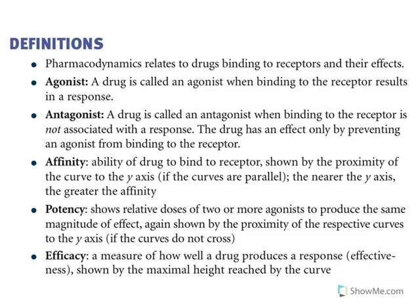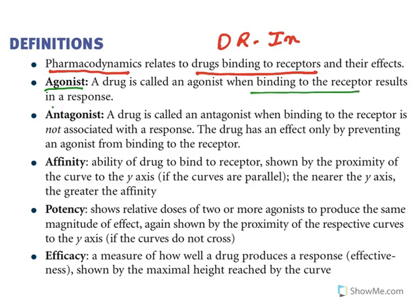Let's get into the topic. First, let us understand some definitions. Pharmacodynamics relates to drug binding to receptors — drug-receptor interactions are dealt with in pharmacodynamics. An agonist is a drug where binding to a receptor results in a response. Binding to a receptor is known as affinity — the ability to bind with a receptor. The ability to get a response is known as intrinsic activity.